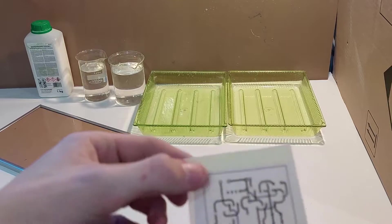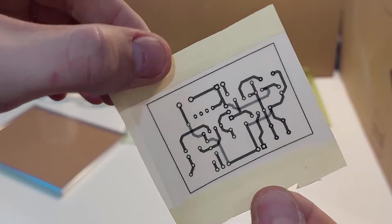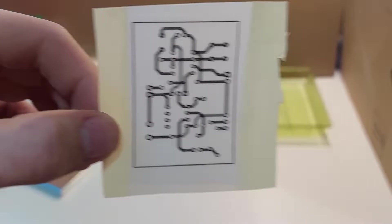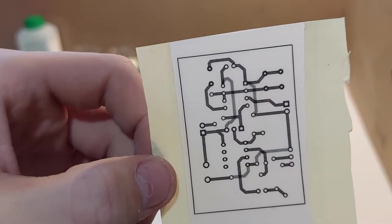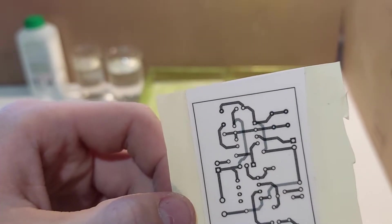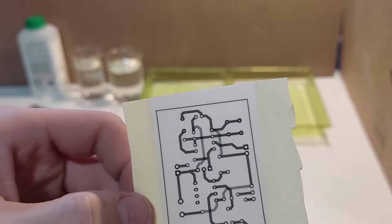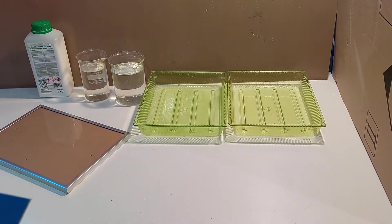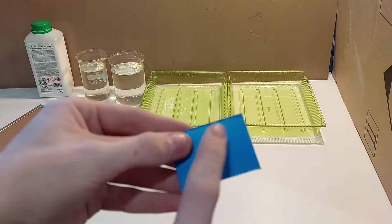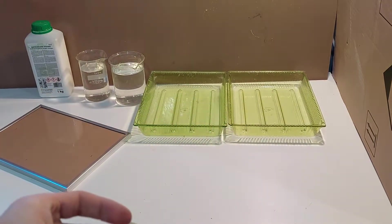I have it now taped together pretty precisely and it's very well aligned. And it's very important that it's very well aligned, so that the etching on both sides matches. Now we just peel off the protective film from the PCB and we just slide it in there.